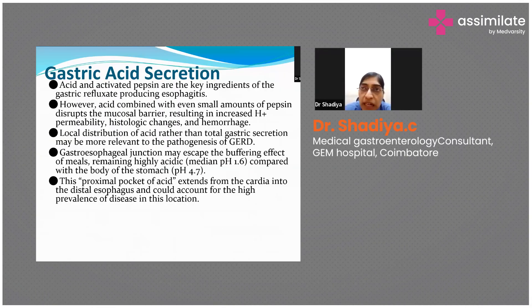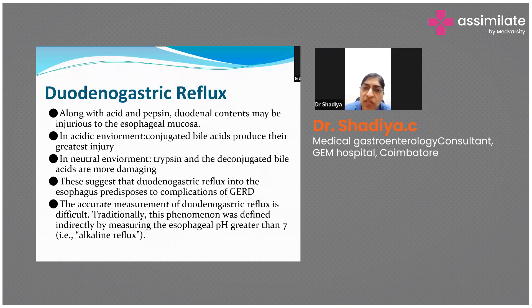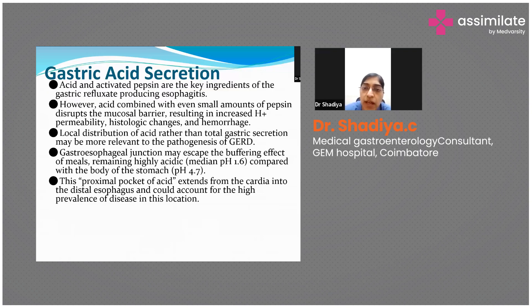These are the mechanisms which produce increased reflux or increased damage to the lower esophageal area, including gastric acid secretion. Acid and activated pepsin are the key ingredients of the gastric refluxate producing esophagitis. Acid combined with even a small amount of pepsin can disrupt the mucosal barrier, resulting in increased permeability and histological changes.